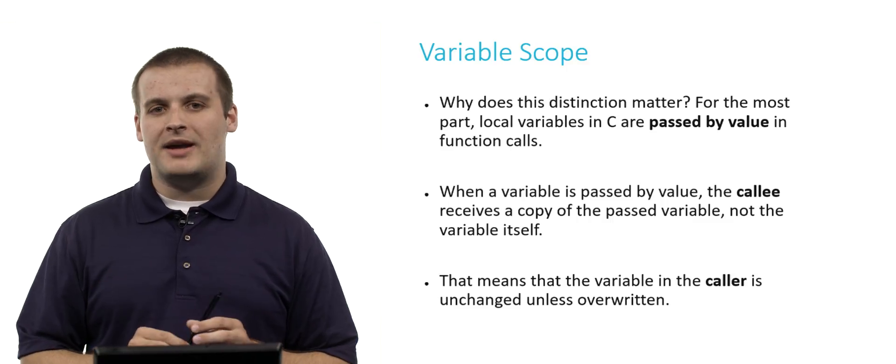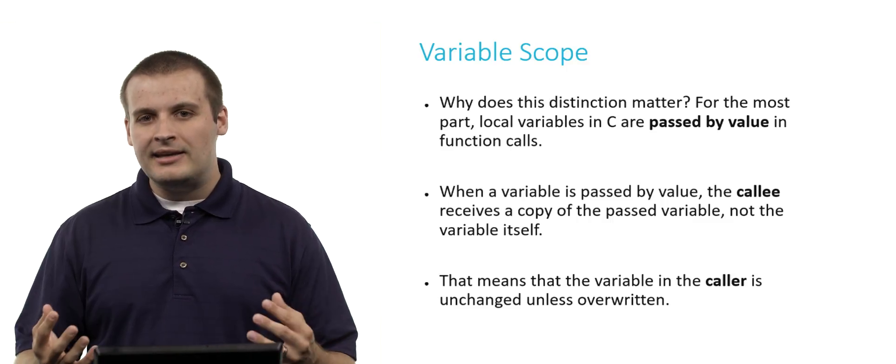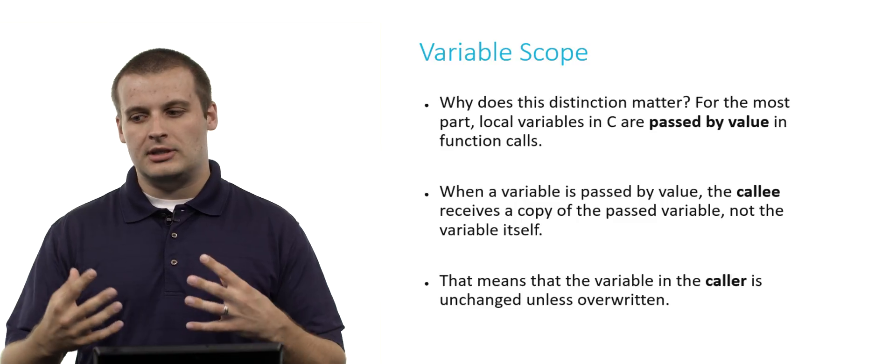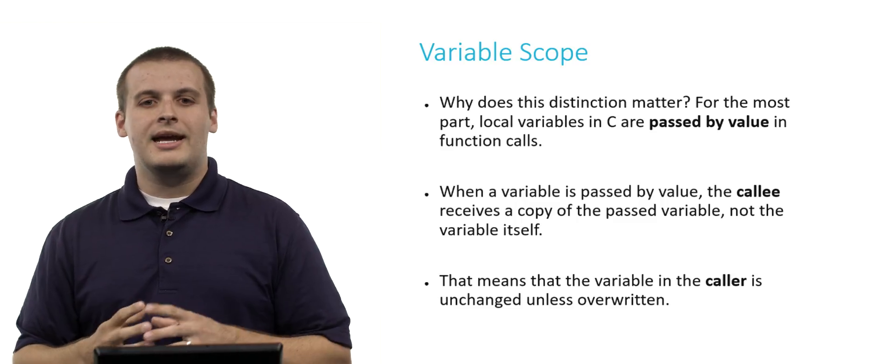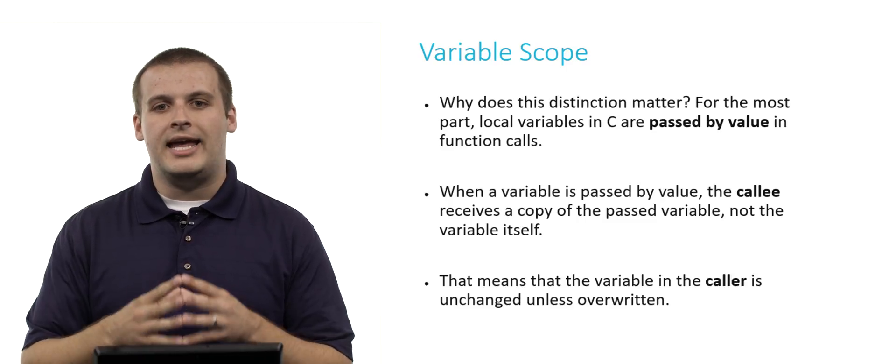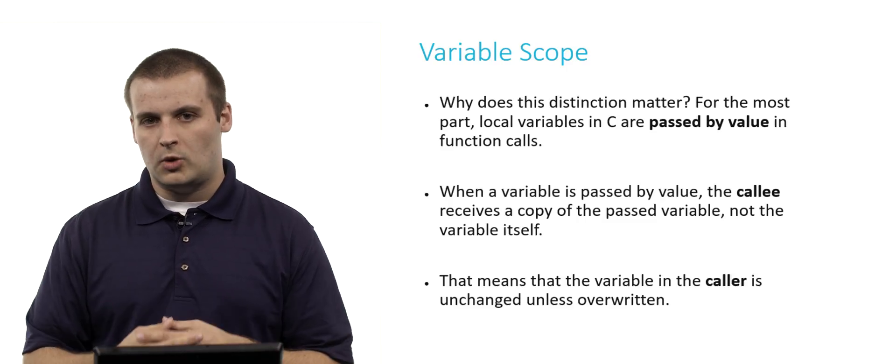When a variable is passed by value, the callee, which is another way of saying the function that is receiving the variable that gets passed in as an input, it actually doesn't receive that variable itself. It receives its own copy of it to work with.